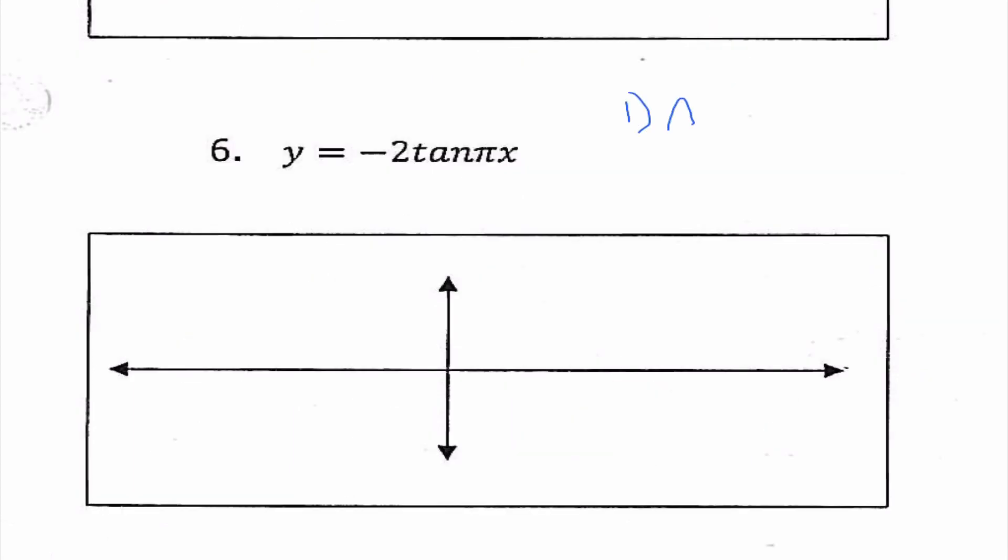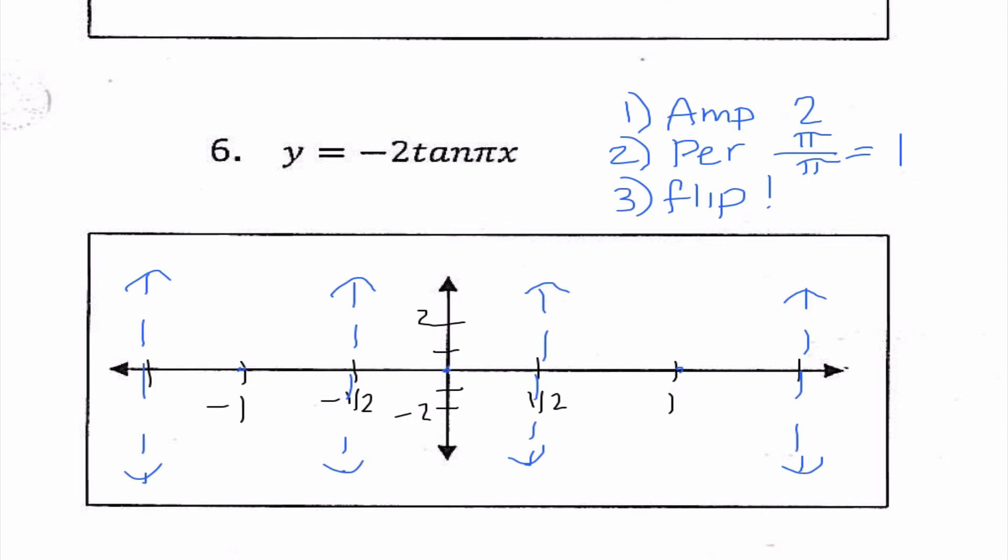Final example. Our amplitude here is 2, because remember it is the absolute value. I do know, though, that it's going to be flipped. And the period is going to be π divided by π, which is 1. So that looks kind of strange, but that's okay. So we have everything plotted now. Since it is a flip, that means when I go to the right, I'm going to go down 2. To the left, I'm going to go up 2. And we are going to repeat that once again in every single period. So big thing for us with tangent is that we just need to remember that the way that we find the period is π over b as opposed to 2π over b.